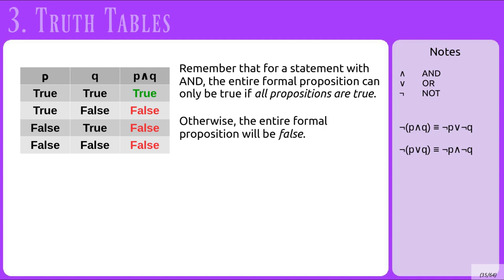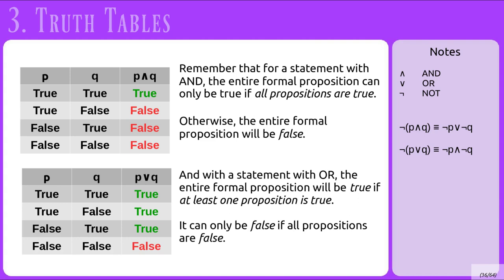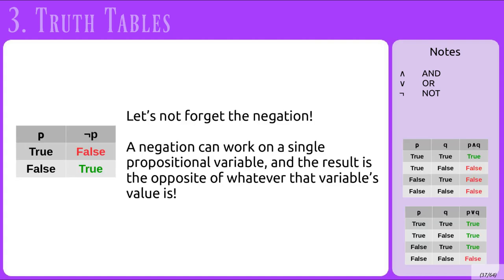With OR, the entire formal proposition will be true if at least one proposition is true, and only false if all propositions are false. So for P OR Q, any row with at least one true gives a true result; only the row where both P and Q are false gives false. Let's also look at negation: NOT P simply gives the opposite of P's value in each row.